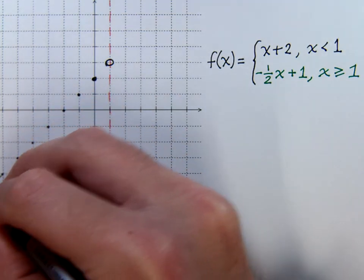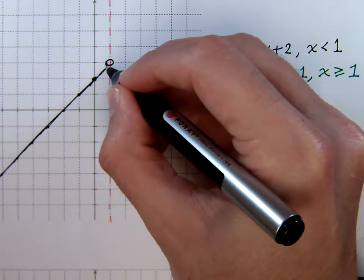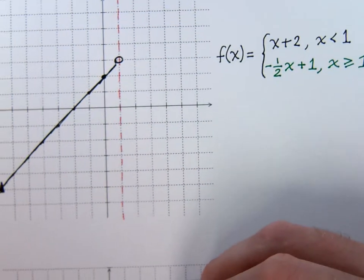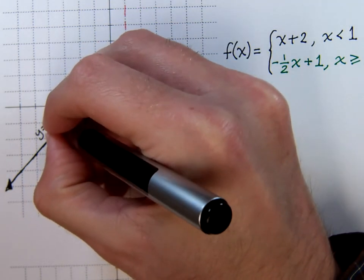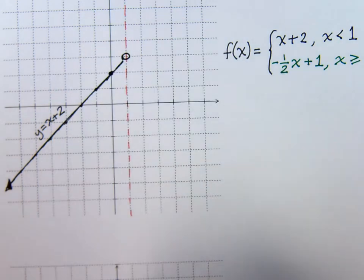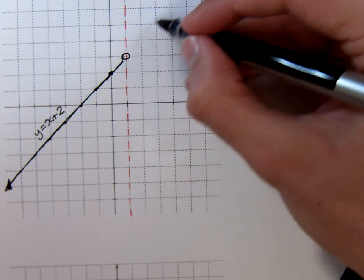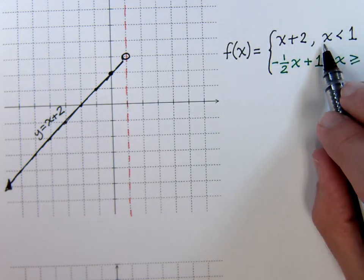These are the other points that are on that graph. Your function is going to look just like this piece right here. This piece is what your normal graph of y equals x plus 2 would look like. Except we can't keep drawing it all the way over here, because this function says, no, no, only for x is less than 1.